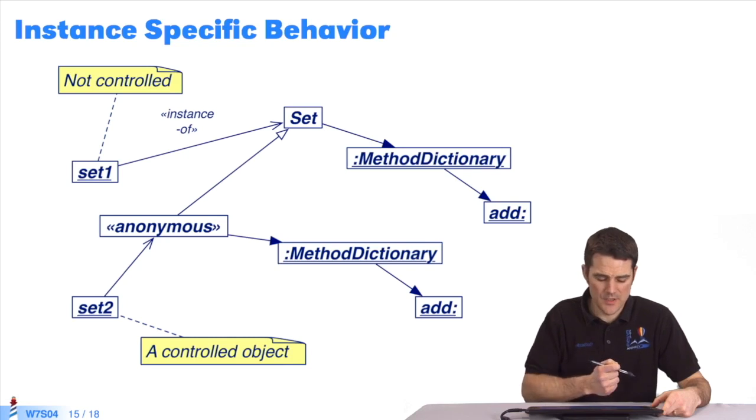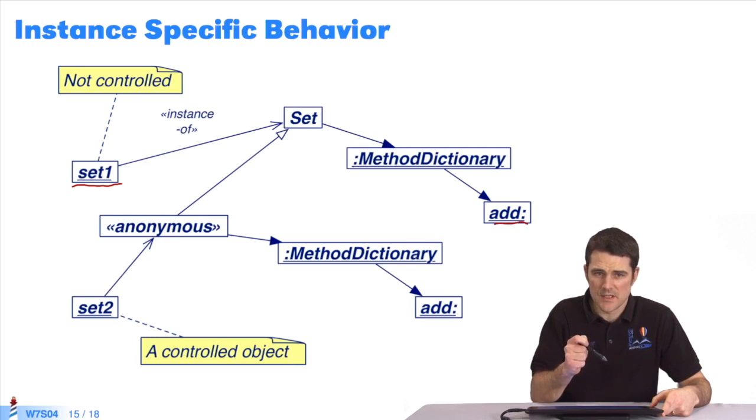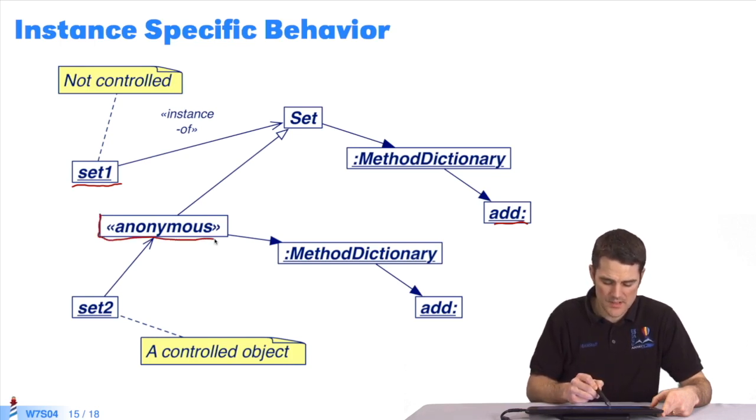This advanced mechanism allows us to endow a specific instance of model class with a behavior. Let's apply this to set class to make it clearer. I create set1, an instance of set class. The setClass method dictionary contains the method add. For a specific instance of set class, I want to change the method add, which has a specific behavior for a specific set. So I create an anonymous class here. It's a specific class that inherits from set class. Here is its inheritance. The object set2 is an instance of this anonymous class.